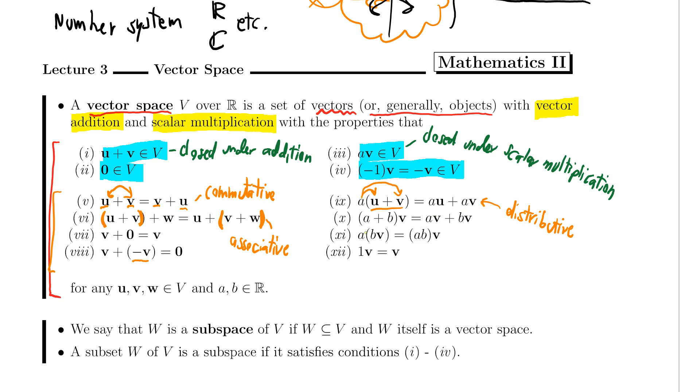And also for multiplication, if I multiply a to bv, it's the same as you multiply a and b as a real number first and then I multiply that to the matrix, I mean to the vector v. And the last one, if you multiply one to any vector, then you get the same vector. So these are the 12 properties that a vector space needs to have.